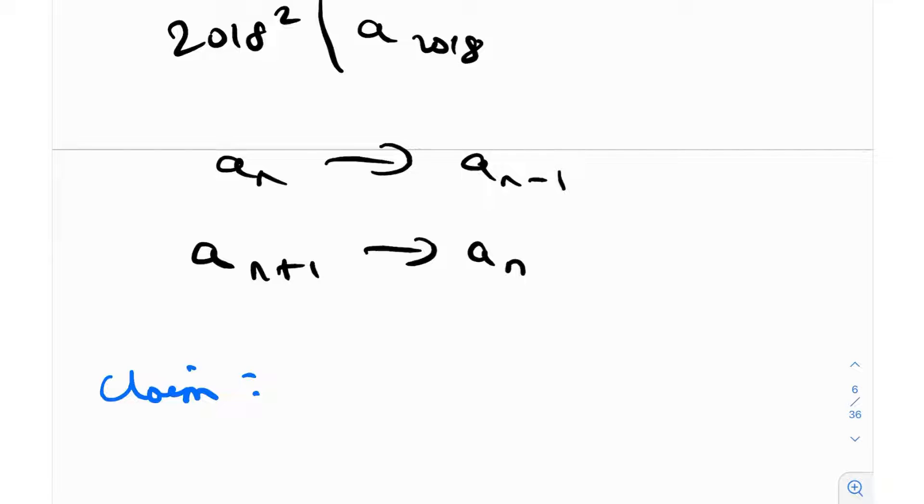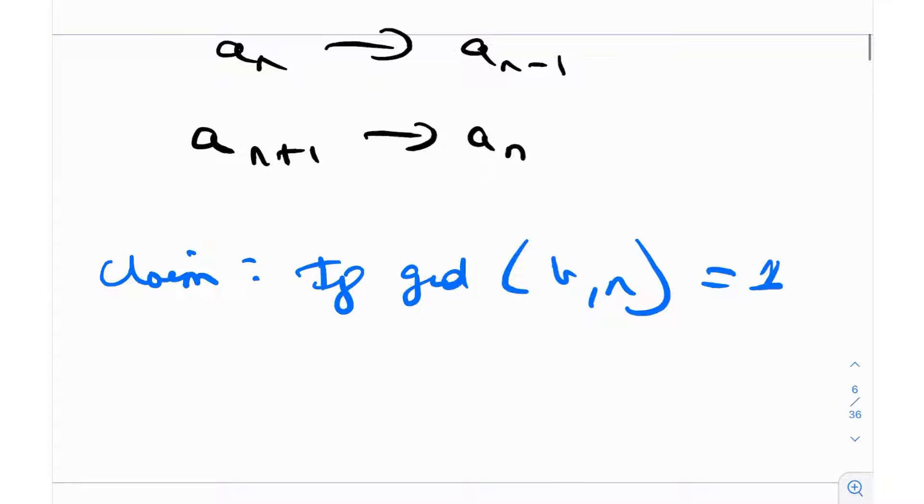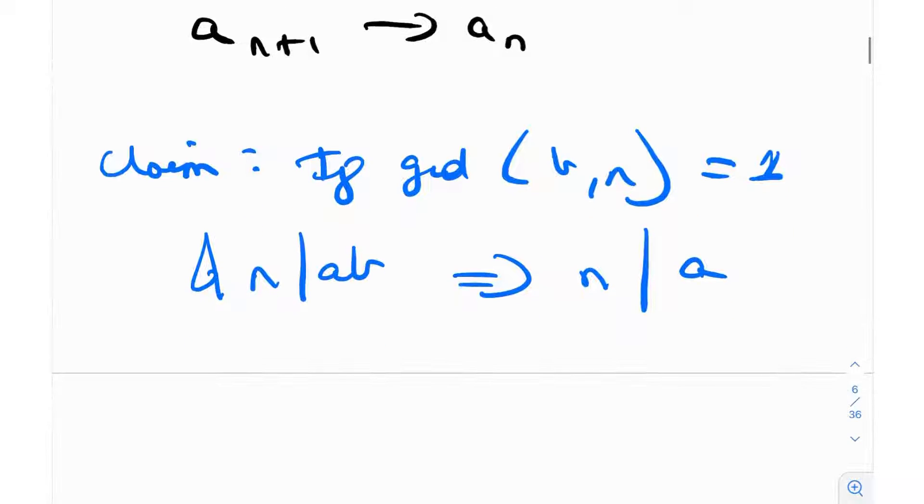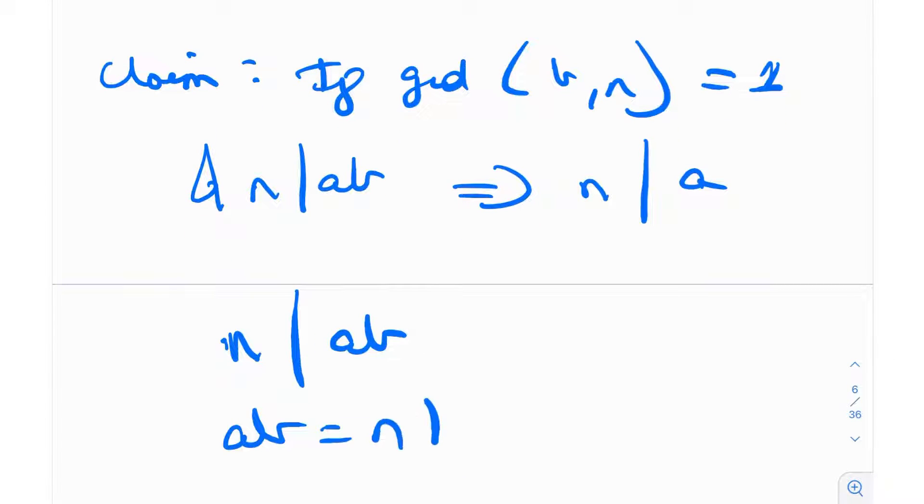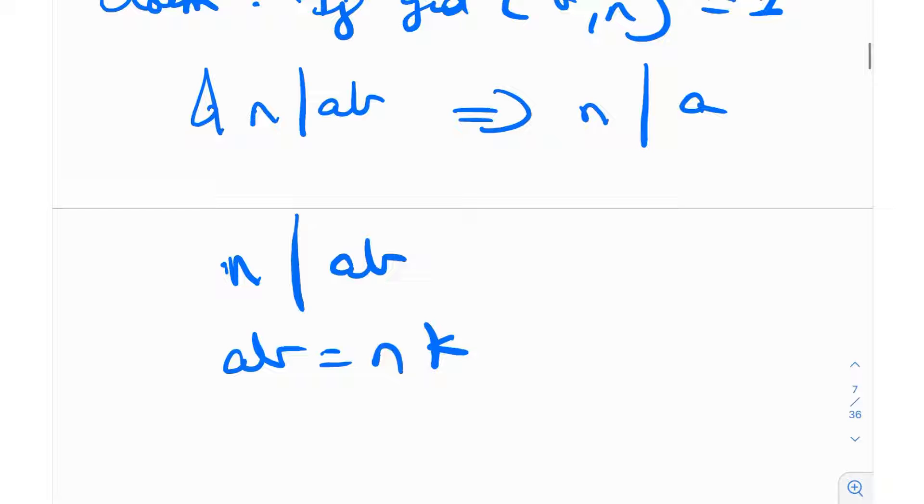Before we move on, I want to make a claim related more to number theory than algebra. If gcd(b, n) = 1 and n divides ab, then that essentially implies that n divides a. This means if ab = nk for some integer k, and gcd(b, n) = 1, then n has to divide a. These two quantities n and b don't divide each other since the greatest common divisor is one.